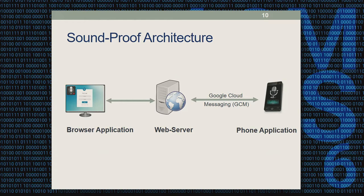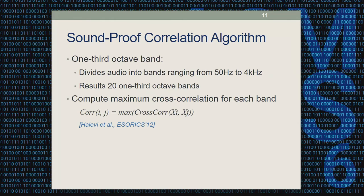The SoundProof architecture has three core components: a browser application with a login form and recording capability; a web server as the point of communication between the browser and phone applications; and a phone application that starts recording when triggered by the browser through the web server. SoundProof implements a correlation algorithm using one-third octave bands, dividing the audio from the browser and phone into 20 bands ranging from 50 Hz to 4 kHz, then computing maximum cross-correlation between each band. Finally, it computes the average of the 20 maximum correlation scores.